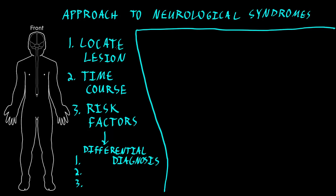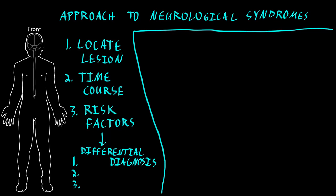This approach is exactly the same as for syndromes related to any other system of the body. But the localization step tends to be more involved for neurological syndromes because of the size and complexity of the nervous system. There are many different types of pathology that can affect the nervous system and cause areas of abnormality — lesions. All the different neurological disorders can be organized into different categories of pathology.